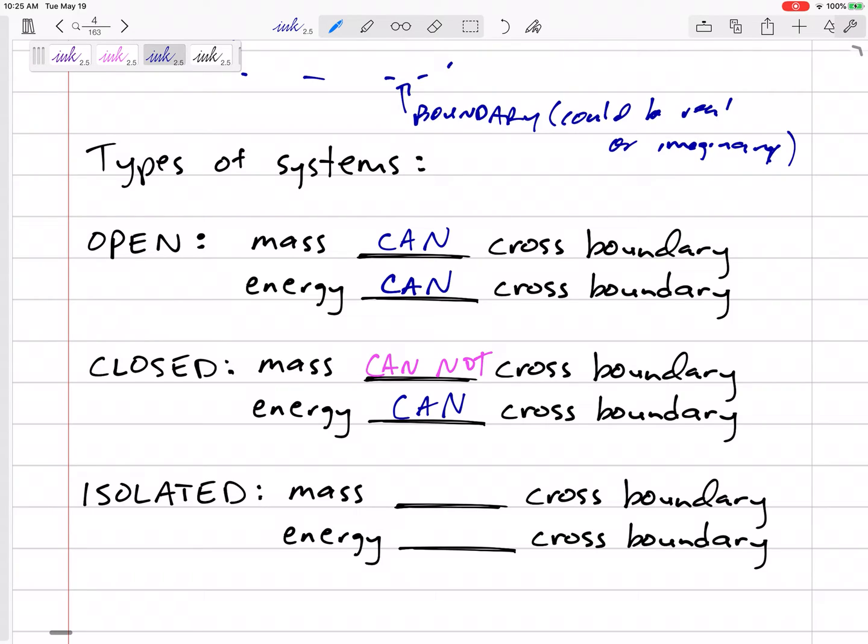But heat might could cross that boundary. There are definitely boundaries where heat and some energy can escape, or we can heat it up, put a fire under it and heat it up. So a closed system: mass can't cross the boundary but energy can.